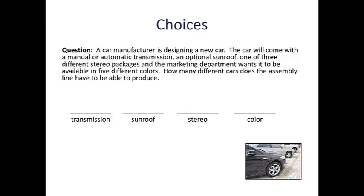To calculate the result, I'm going to start by putting the number of options for each of those choices in the blank above it. For the transmission, we have two options — either manual or automatic. For the sunroof, we also have two options: either the car has the sunroof or it doesn't. For the stereo, we have three packages to choose from. Finally, there are five color options.